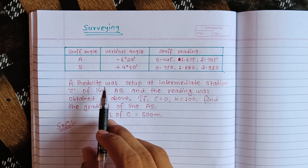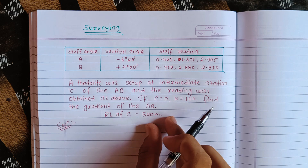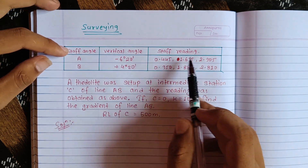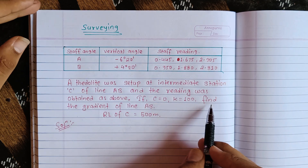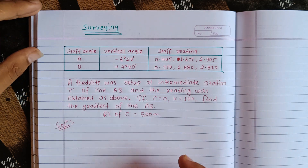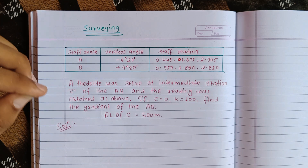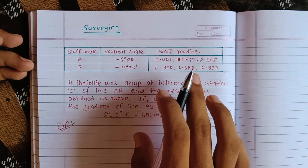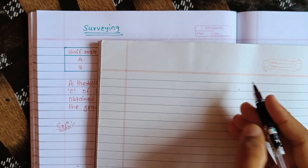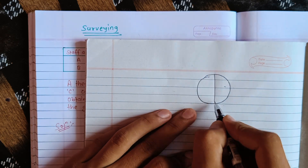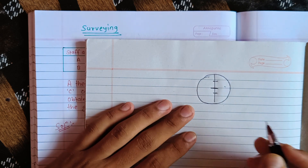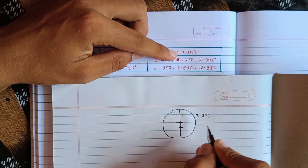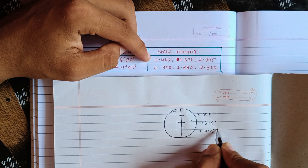We have a set up line. The instrument is set up at intermediate station C on line AB. The reading was obtained as above. If C is equal to zero and k is equal to zero, the constant of the gradient of line AB. The upper reading is 2.905, the middle is 1.675, and the lower is 0.445.